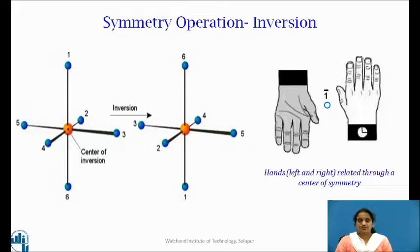The inverse operation occurs through a single point called the inversion center. See this image. Each part of the object is moved along a straight line through the inversion center to a point at an equal distance from the inversion center. Look at this another example which shows hands left and right related through a center of symmetry.